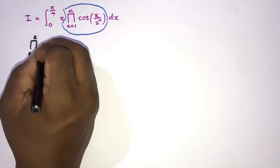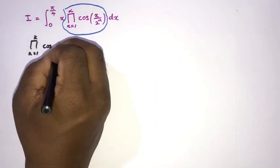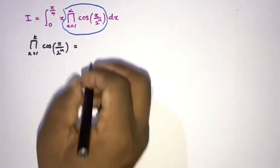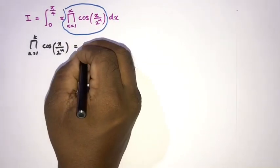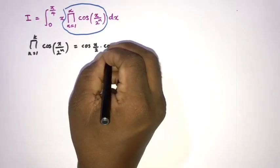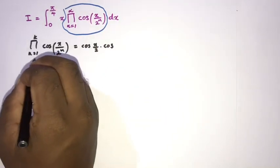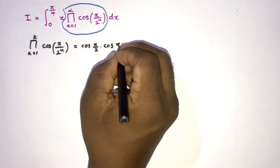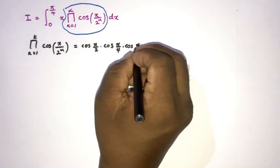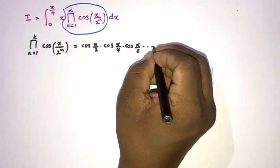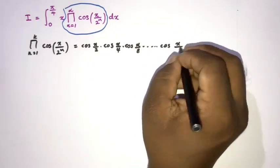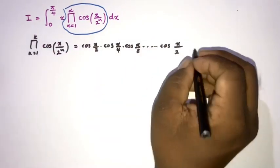We take the product of cosine of x over 2 raised to the n. We can write this out: when n equals 1 we have cosine of x over 2, then cosine of x over 4, then cosine of x over 8, and so on up to cosine of x over 2 raised to the k.